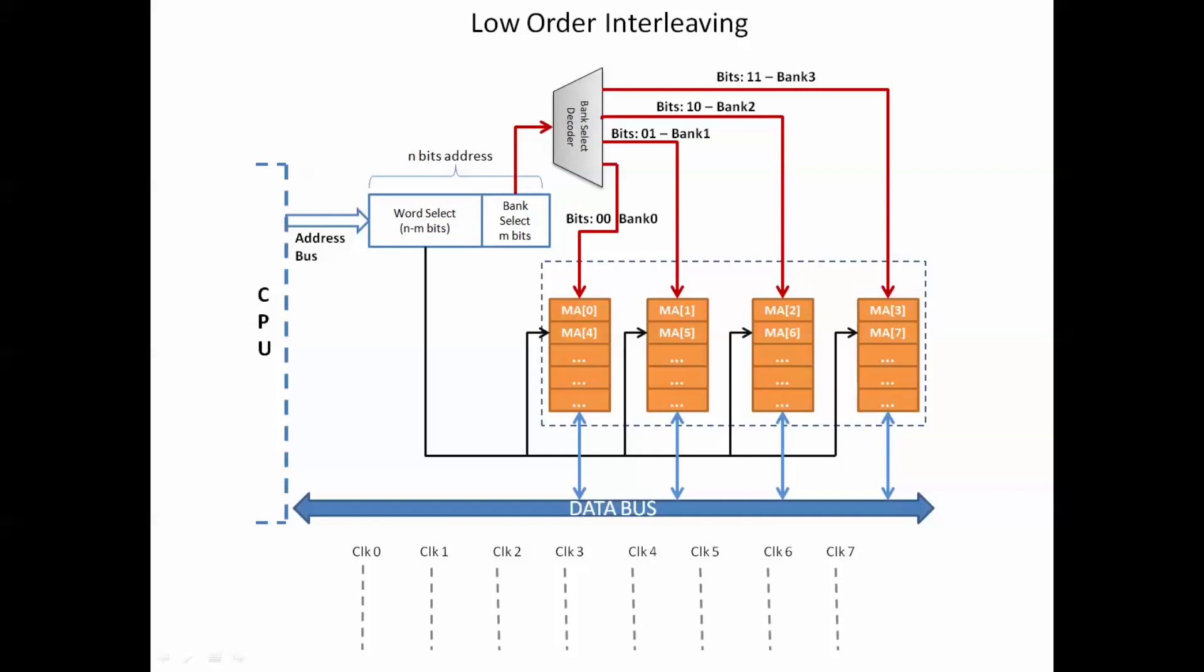Consider that a memory is divided into four banks. As shown here, being a lower-order interleaved, subsequent memory addresses are interleaved across the banks. So when the CPU sends the address, the lower bits of the address will select the bank and the remaining higher bits will select the word that needs to be fetched. In this example, as there are four banks, two bits will be required to select the bank. The lower-order bits 0, 0 in the first case will select bank 0 and the remaining bits will select the word within bank 0.